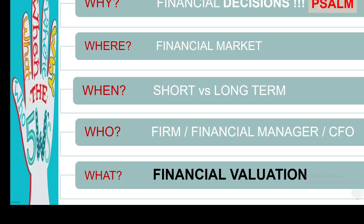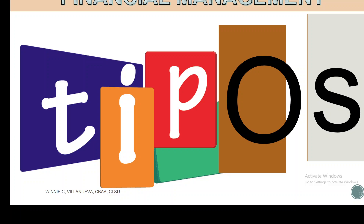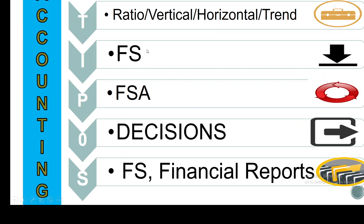We have solved for the decision. How about the TIPOS? We need to include the S — storage — because that would be documentation. If we are discussing financial statement analysis, we will use ratio, vertical, horizontal, and trend analysis as your tools. Your input will be the financial statements. Your process will be financial statement analysis. That is for the economic decision, which is related to a financing decision. The documentation we need includes keeping your financial statements and financial reports.